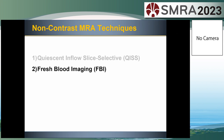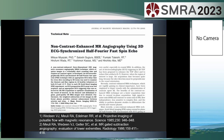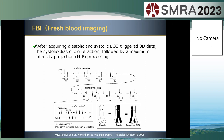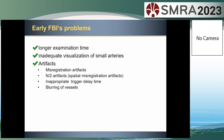Let's move on to another non-contrast MRA technique: fresh blood imaging, FBI. FBI was first reported in 2000. However, a 2D version of contrast subtraction angiography was published by Dr. Edelman's group in 1985. In FBI, after acquiring diastolic and systolic ECG-triggered 3D data, the systolic-diastolic subtraction is followed by MIP processing to get the arterial image. However, early FBI had some problems: longer examination time, inadequate visualization of small arteries, and some artifacts.